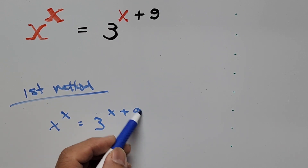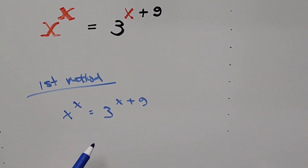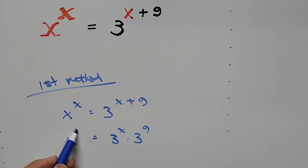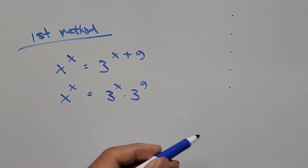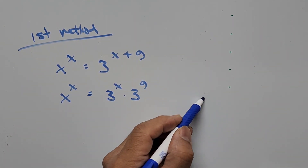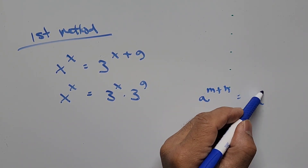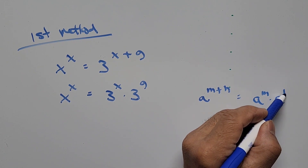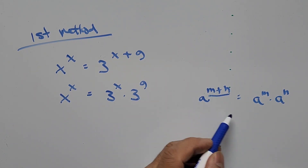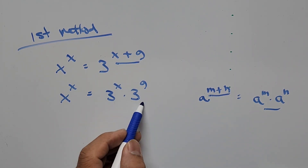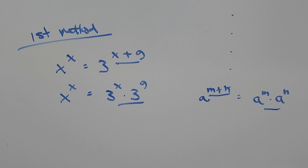Simplifying the right-hand side of the equation, it'll be 3 to the power of x times 3 to the power of 9. The left-hand side remains the same. On the right-hand side we use the formula a to the power of m plus n equals a to the power of m times a to the power of n, so the exponents are added and then separated into the same base.